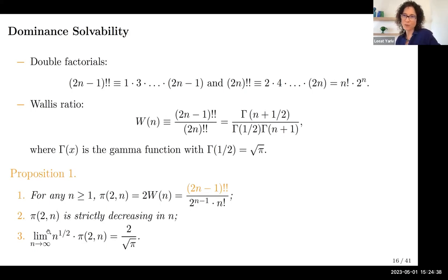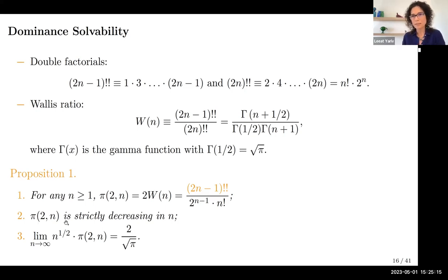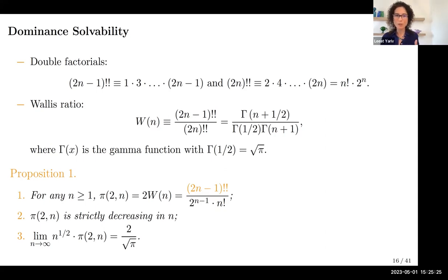Here is the first proposition: for any n, the probability of dominant solvability for a two-by-n game is given by two times the Wallis ratio. The numerator (2n−1)!! effectively counts the number of two-by-n games in terms of ordinal equivalence that are dominant solvable. The probability π(2,n) is strictly decreasing in n — nicely monotonic — and asymptotically behaves like one over square root of n.